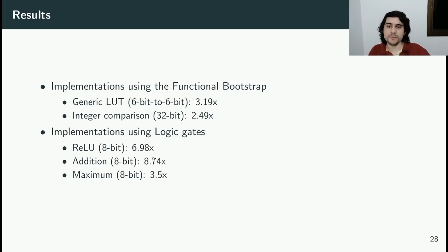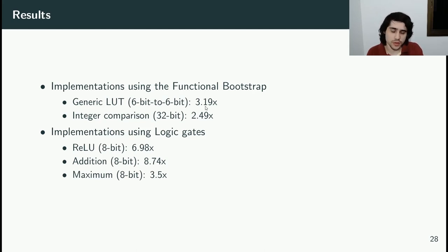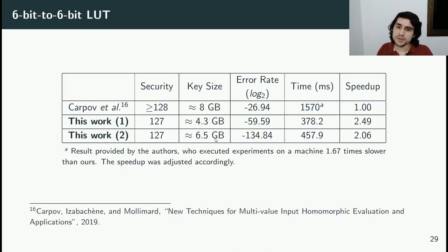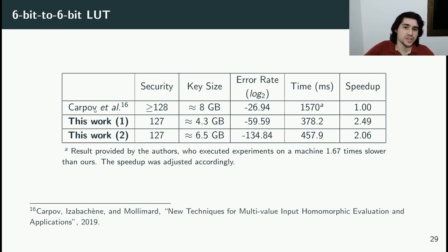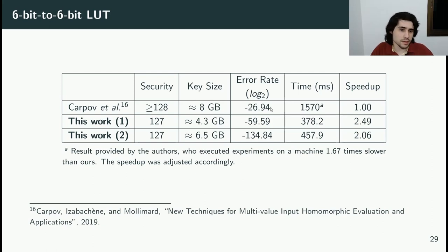Our results: we implemented several functions to compare with previous literature, achieving gains of up to 3.2 times compared to works already using the functional bootstrap, and up to almost 9 times compared to works using logic gates. For the 6-bit lookup table, the difference from Karpov and others is that they use one functional bootstrap with very large parameters, while we use several bootstraps with small parameters. We have gains in basically all aspects: smaller keys, much smaller error rate, and execution time gains of up to 2.5 times.